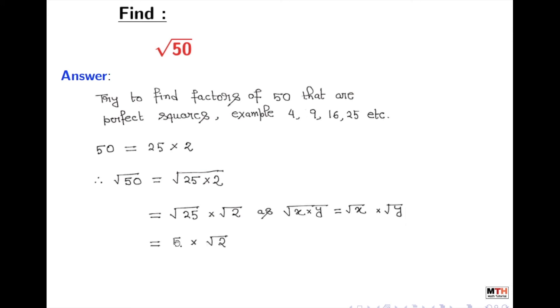And square root of 25 again can be written as 5. So we get 5 times square root of 2, that is 5 root 2, and this is our answer.